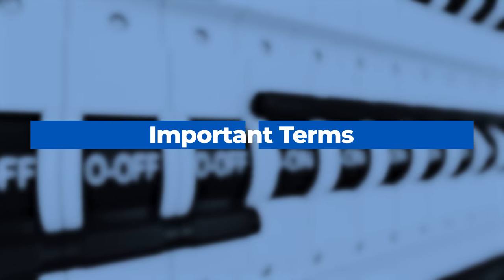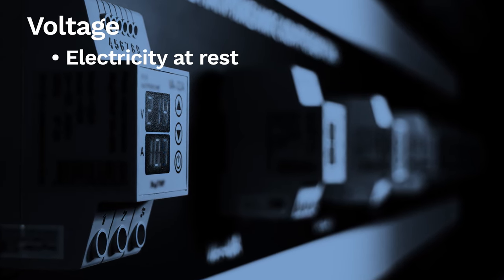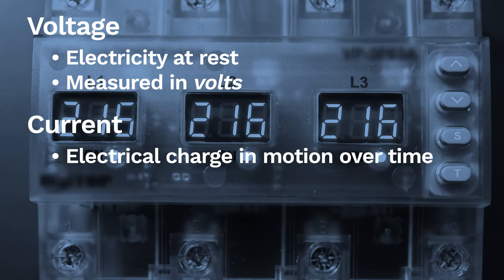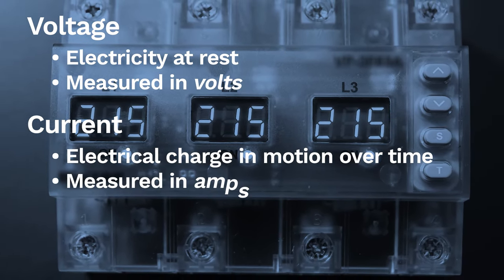Let's define some important terms related to circuit breakers. Voltage is electricity at rest and is measured in volts, while current is an electrical charge in motion over time and is measured in amps.